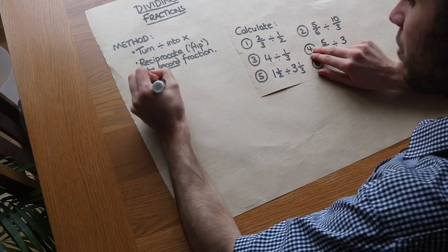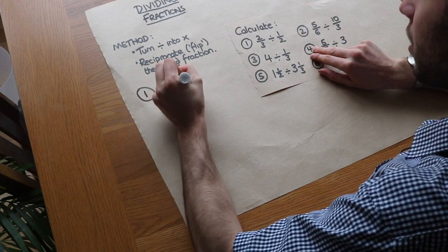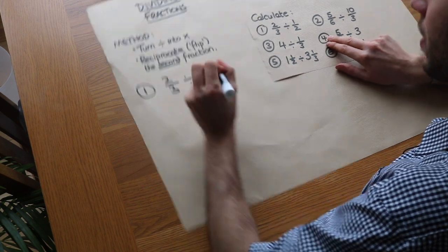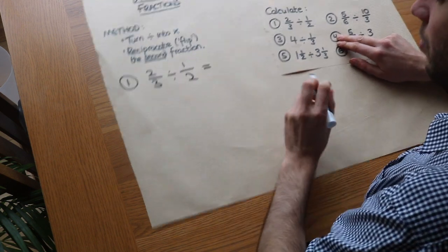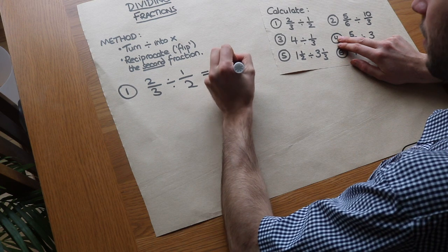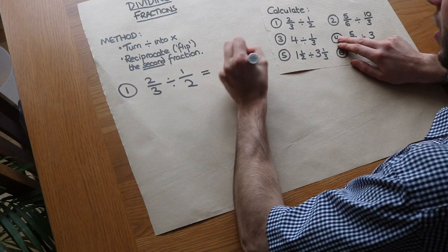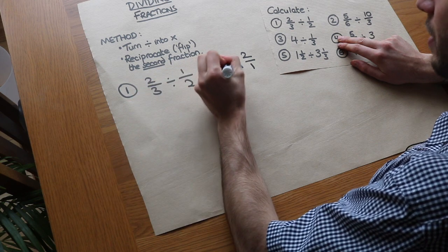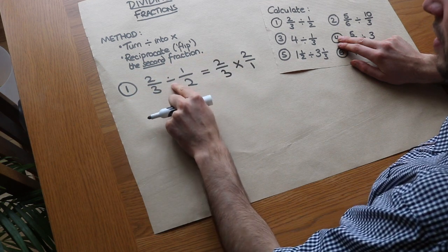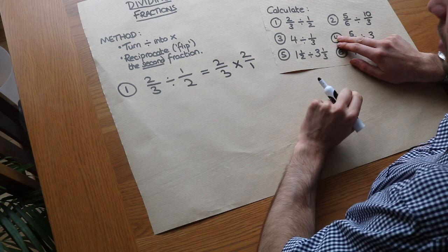Let's give you this first example. We've got 2/3 divided by 1/2. All we need to do is turn that divide into times and reciprocate, i.e. flip the second fraction. So we've now got 2/3 times 2/1 instead of 1/2.